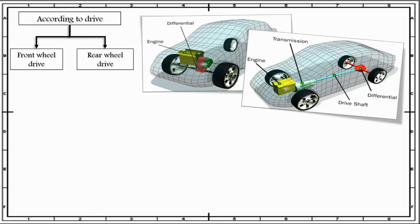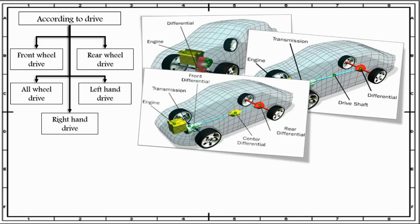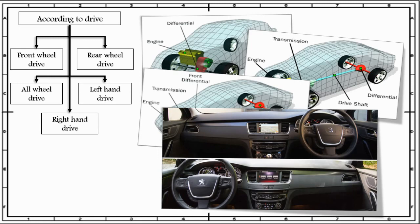According to drive, the third type is all wheel drive. In this layout, the engine is fitted at the front or in the back and the drive is given to both front wheels as well as the rear wheels, so the differential will be present at the front as well as at the back. The fourth and fifth categories according to drive are left-hand drive and right-hand drive. When the driver is seated on the left-hand side of the vehicle, it is known as left-hand drive, whereas when the driver is seated on the right-hand side, it is known as right-hand drive. Left-hand drive is used in western countries like Canada and USA, whereas right-hand drive is more popular in European and Asian countries like India, China, and Pakistan.